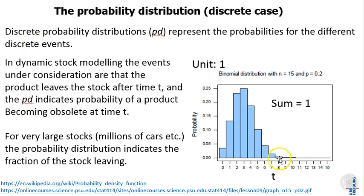Here is the discrete case where we can just record the probability of an item leaving the stock at a certain time t. The unit of the probability here is 1 and the sum is also 1. Meaning that the probability that the item leaves the stock at some point equals 1, and this of course comprises leaving after short times, medium time, and after very long time.